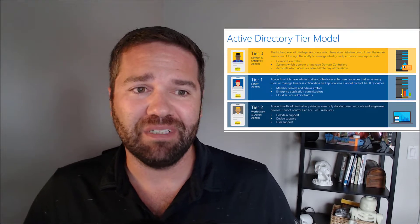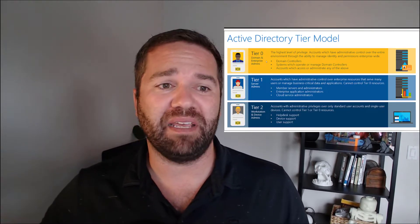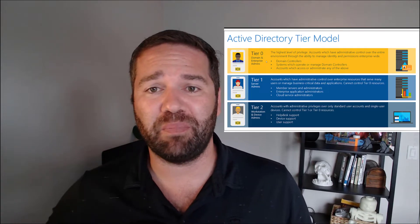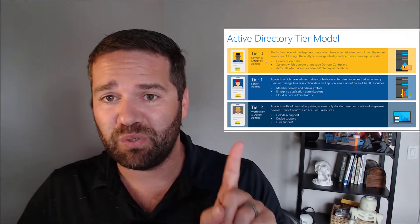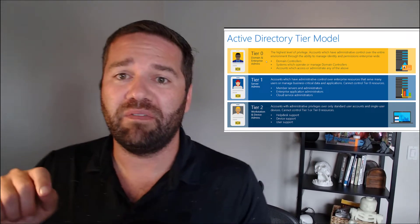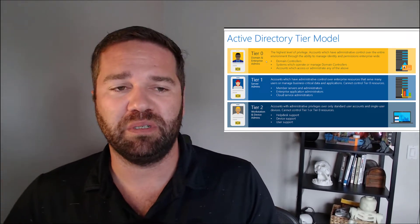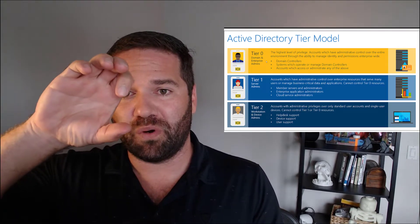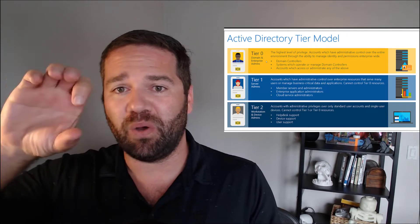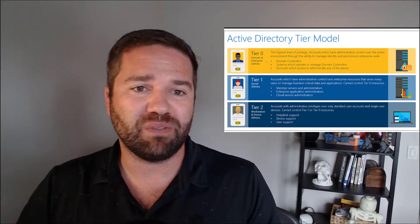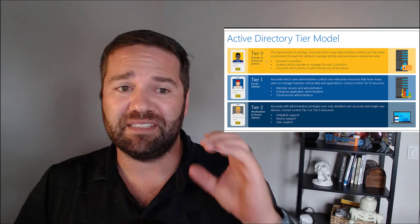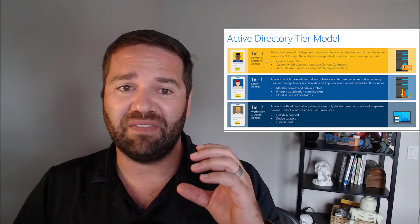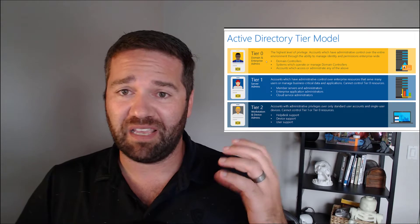If you're not familiar with it, one of the original ways that Microsoft recommended this was the Active Directory tier model, which involved taking your admin accounts and separating them into separate identities. So you would always have a separate user account and admin account. However, the Active Directory tier model put more structure around that. Tier zero would be like domain admins, so for all of your domain admin functions you would always use this domain admin tier. Tier one covers things like server administration.